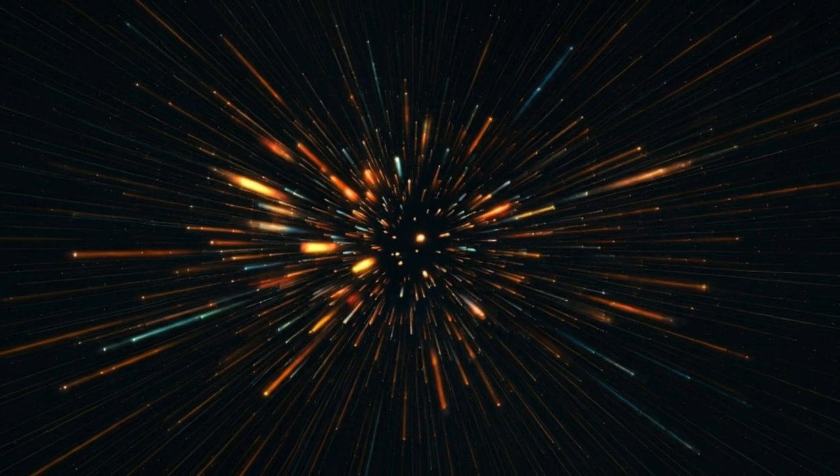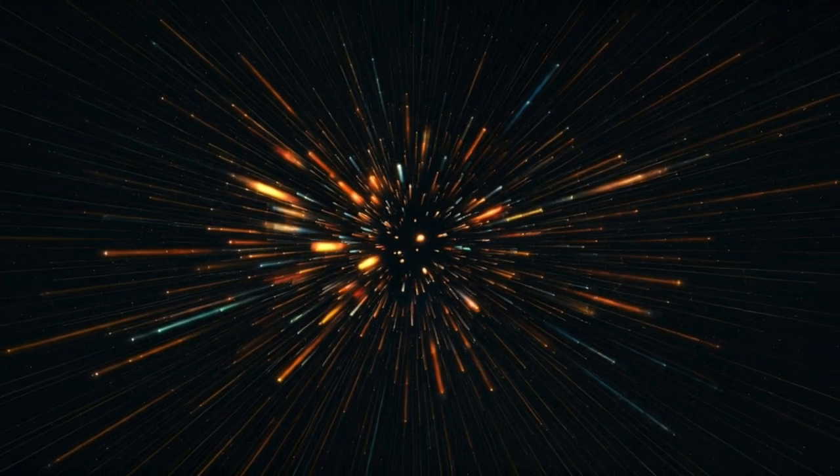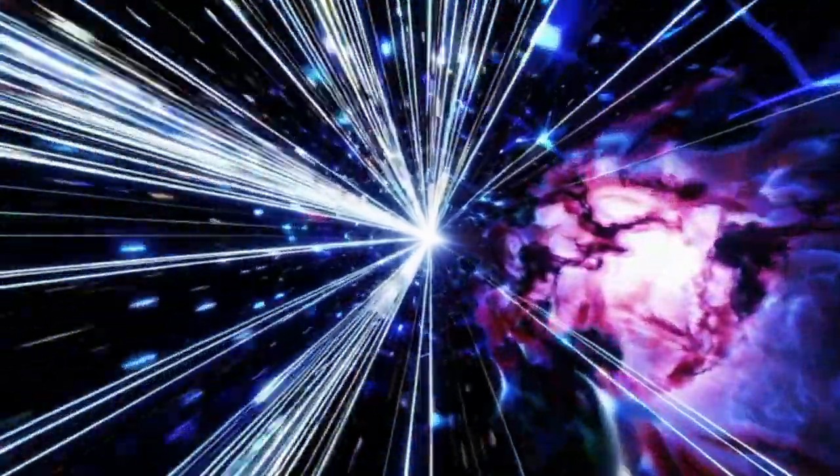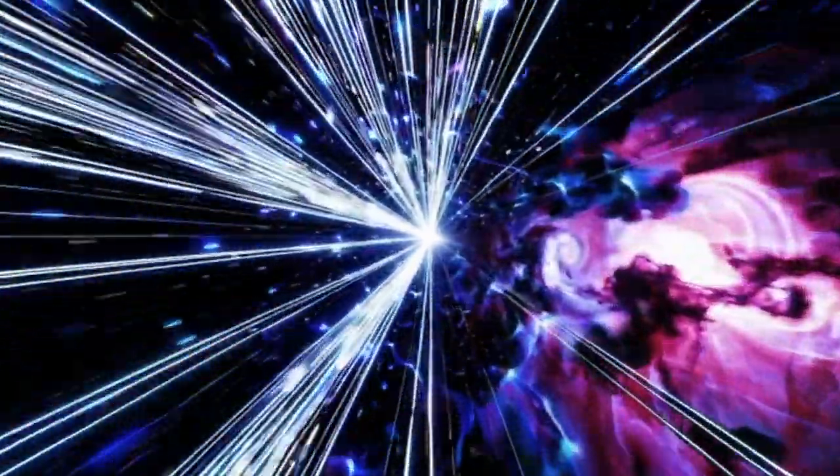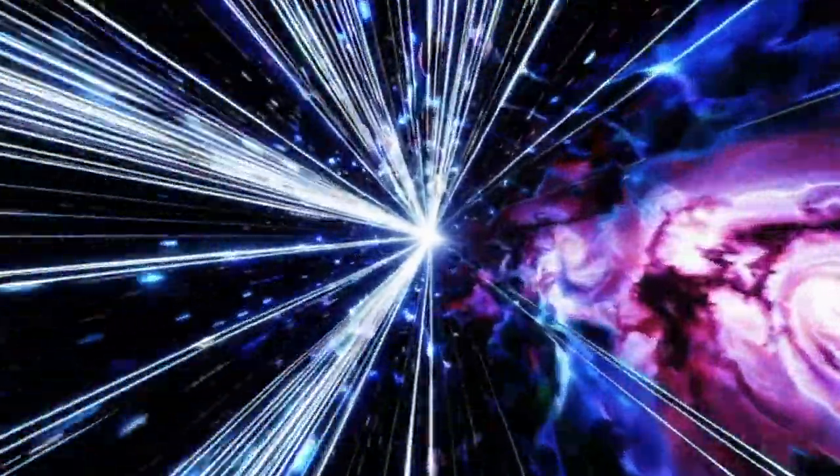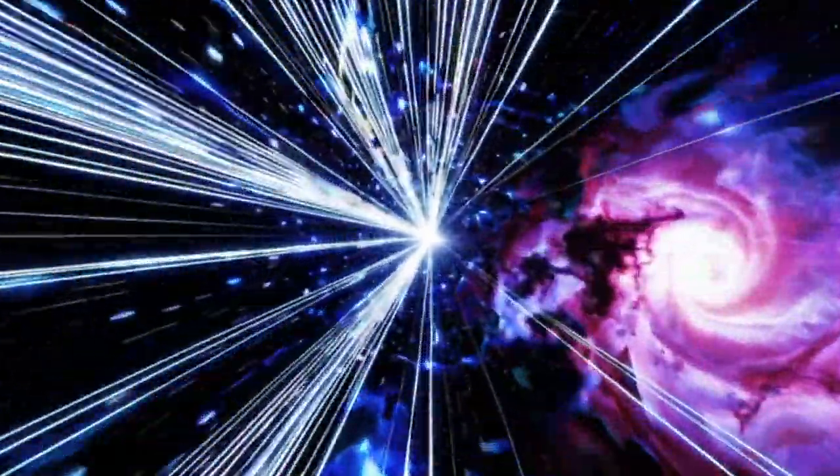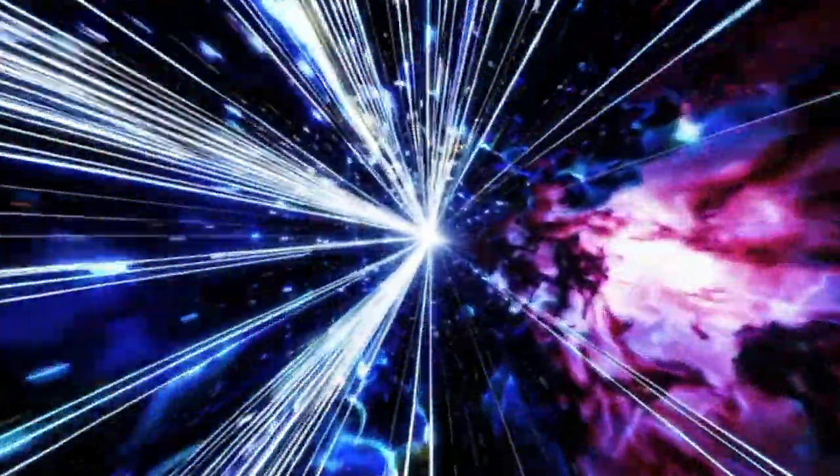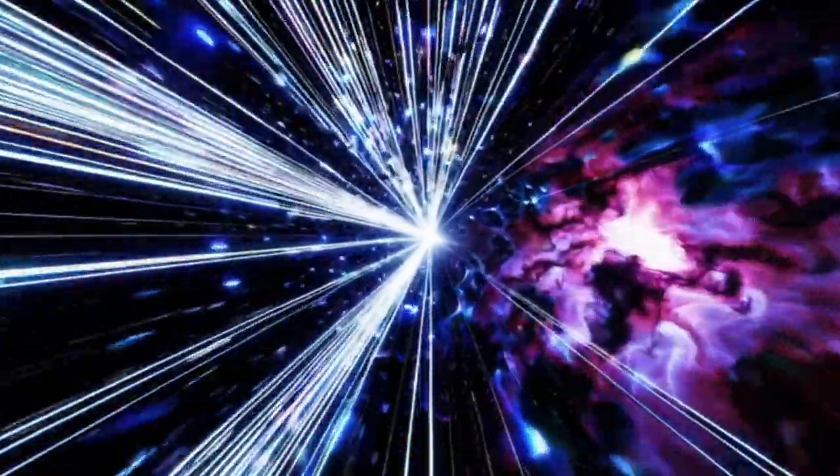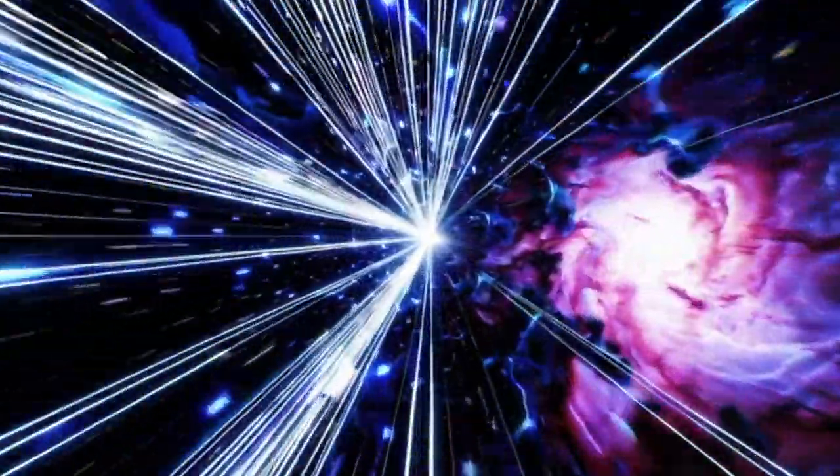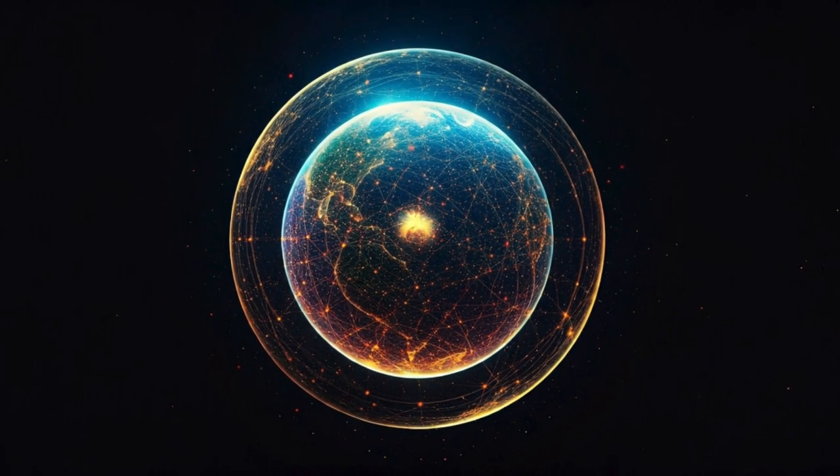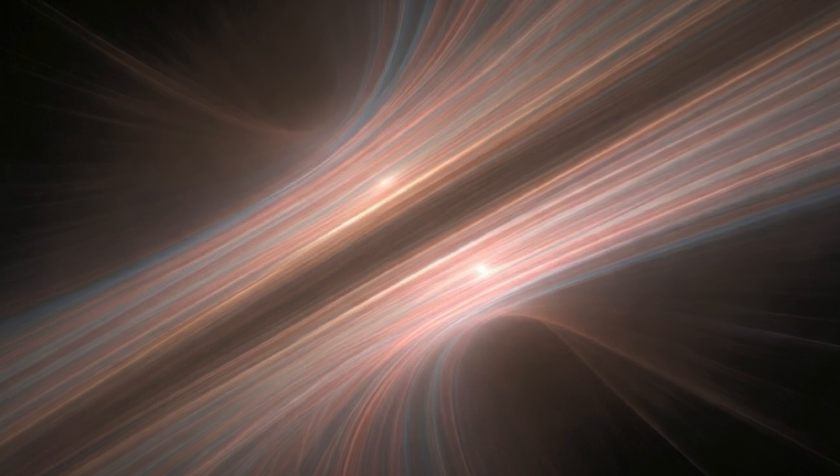Absolutely. The very nature of space-time could be completely different than what we currently imagine. One really interesting area is extra spatial dimensions. You know how we experience space in three dimensions? Up and down, left and right, forward and backward. Well, some theories propose that there could be more dimensions curled up at scales so small that we can't perceive them directly. So you're saying there might be hidden dimensions tucked away within the fabric of space-time. Exactly. Imagine little tiny curled-up dimensions all over the place.